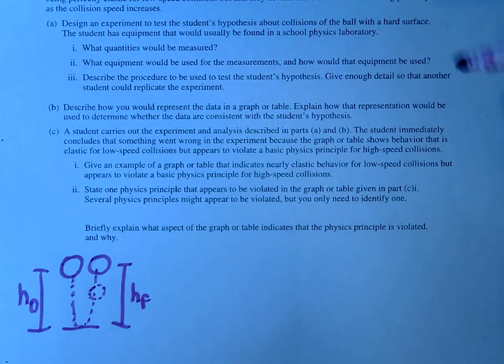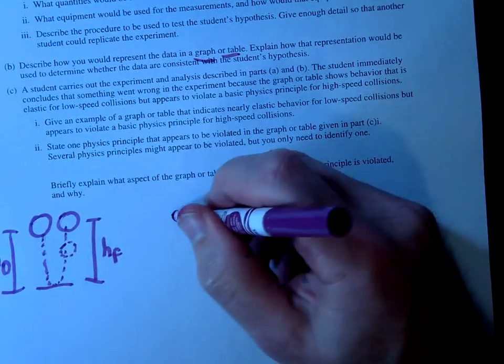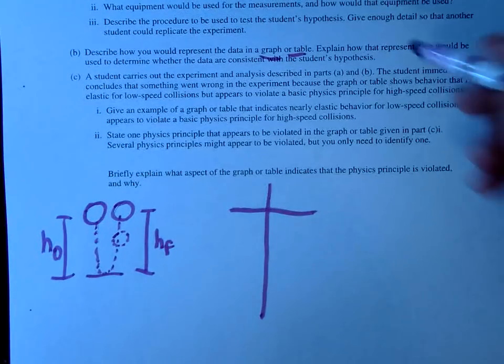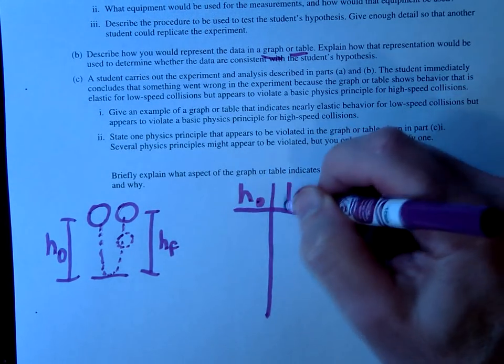So in terms of the analysis of this, it asks you to look at what it'd look like in either a graph or a table. So you do want to make sure you explain that you're going to use different heights. So this could be our height initial, this could be our height final.